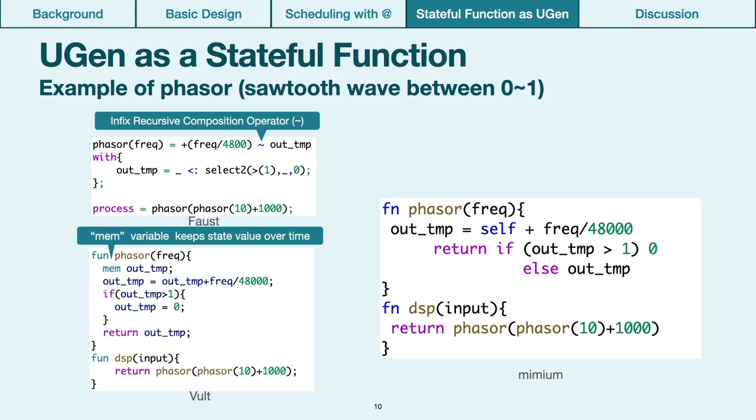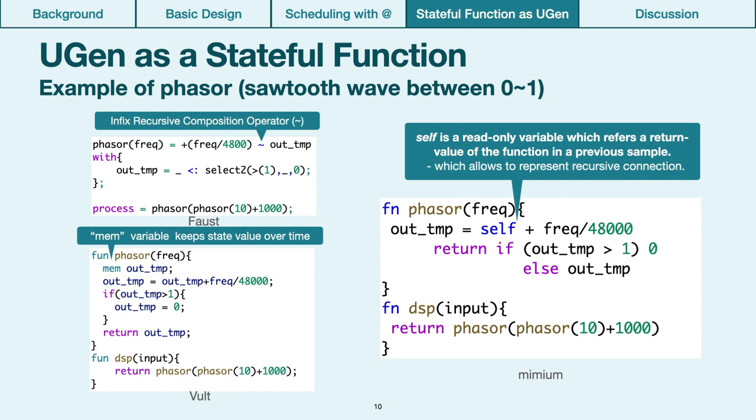Mimium takes a similar approach to Faust, which uses primitive stateful function and recursive connection. However, the expression of the recursive connection is a bit different. In Mimium, users can use the special keyword self only in the function definition context. Self is a read-only variable, which refers to the return value of the function in a previous sample. In Mimium, the use of recursive connection is closed within a unit of the function, unlike Faust which can use multiple tilde operators in one expression.